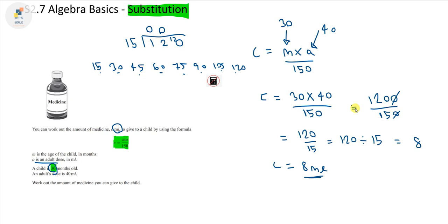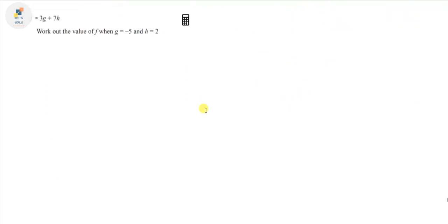Let's move on to the next question. We've got another formula. This time we can use a calculator. It says F equals 3G plus 7H. That means F equals 3 times G plus 7 times H. 3G is shorthand for 3 times G, and 7H is shorthand for 7 times H. Now all we need to do is put in these values. Our G is minus 5, so we can substitute G for minus 5. Our H equals 2, so we substitute H for 2.